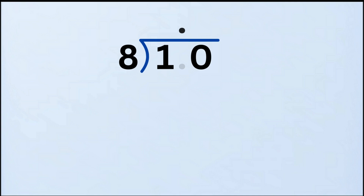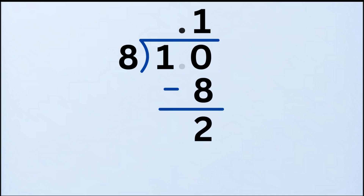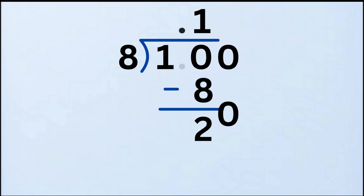So now, instead of asking how many times 8 goes into 1, we ask: how many times does 8 go into 10? The answer is 1 time. We write 1 in the quotient right after the decimal point. Next, multiply: 8 times 1 equals 8. Now subtract: 10 minus 8 equals 2. We still have a remainder of 2 — not done yet. To continue, we bring down another zero from the dividend, placing it next to the 2, making the new number 20.